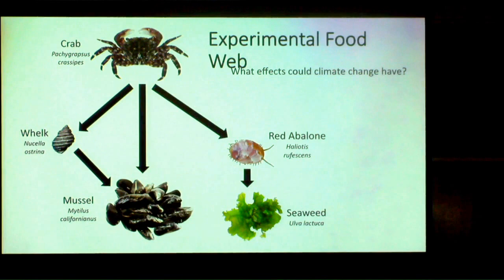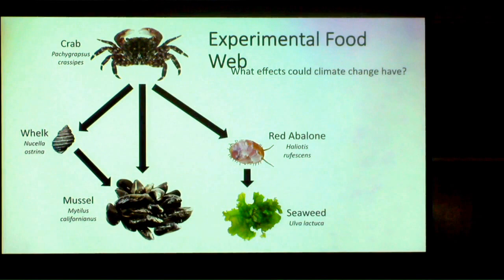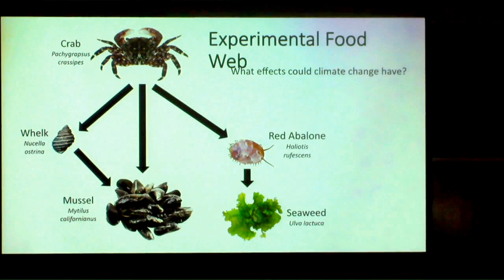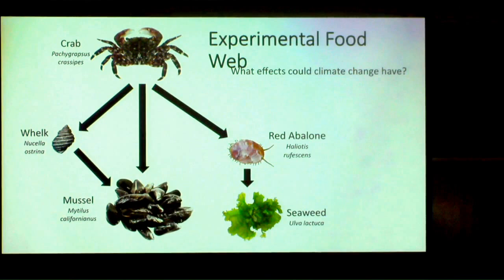Follow-up lab experiments showed they'll eat up to 50 juvenile mussels per day per crab. When you're thinking about areas with 100 crabs per square meter, all eating up to 50 mussels per day, you get a huge community-level effect from crabs generally considered herbivorous. We were using mussels about 10 millimeters long — a few months old. Imagine how many they could eat when mussels first recruit and are just a millimeter long. The bottom line is they are potential predators of mussels, so we could use them in community-level experiments.